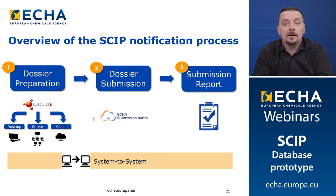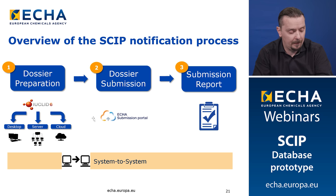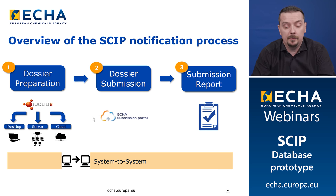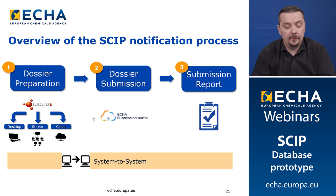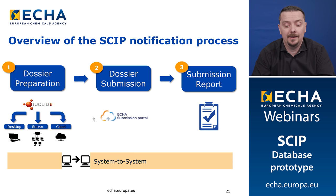The dossier preparation needs to be done either manually in IUCLID or automatically to be submitted system-by-system. The dossiers need to be submitted in the ECHA submission portal, which is also accessible in the ECHA cloud services. After the submission, the submission process can be followed, and in the end the user will be able to see their submission report. I will explain more about the system-to-system process a little bit later.